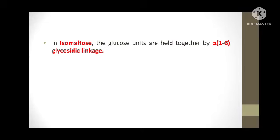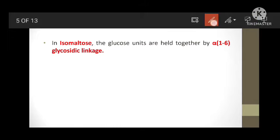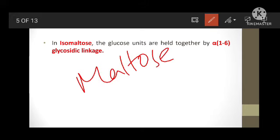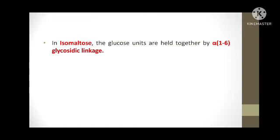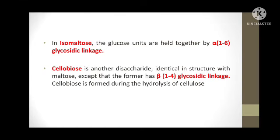The 2nd example is isomaltose. It is also similar to maltose and contains 2 glucose units, similar to the structure of maltose. But they are held together by alpha-1,6 glycosidic linkages. So in maltose, the 2 alpha-D glucoses are held together by alpha-1,4, but in isomaltose, 2 alpha-D glucoses are held together by alpha-1,6 glycosidic linkages.